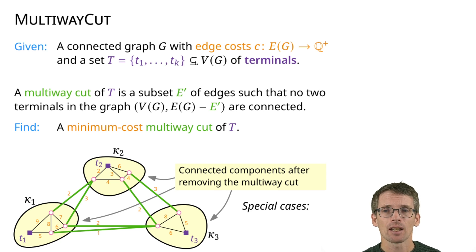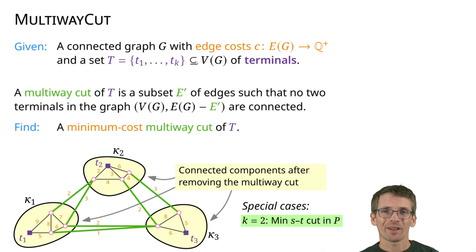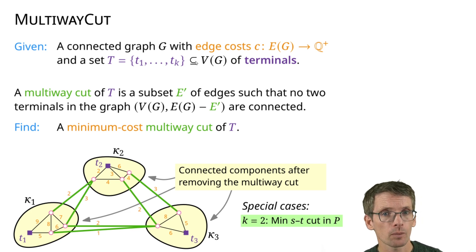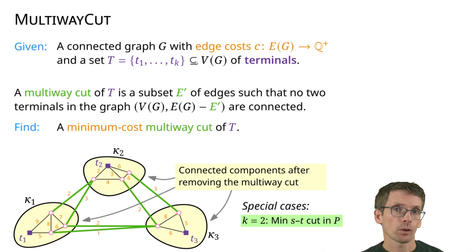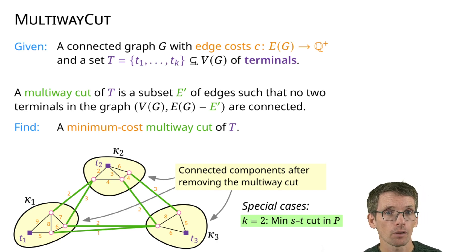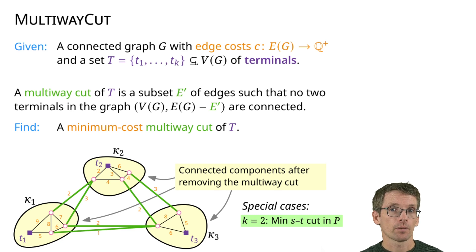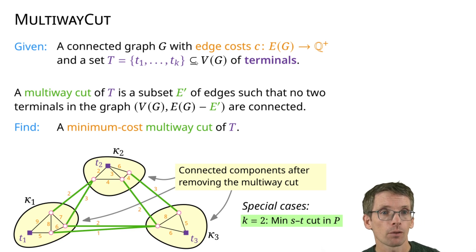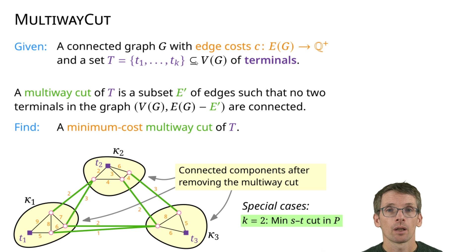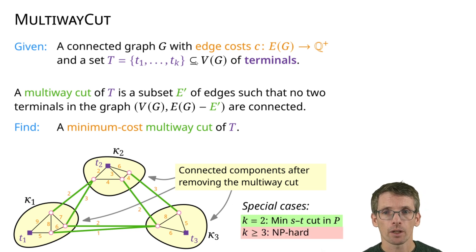There is a special case solvable in polynomial time: k = 2, which is the min s-t cut problem. If you know flow algorithms, you know max-flow min-cut, which is solvable in polynomial time. But for k ≥ 3 this problem is NP-hard, so we want an approximation algorithm.